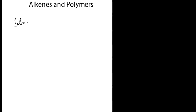An alkene is basically a hydrocarbon — a molecule made up of hydrogen and carbon — but it has a double bond. By definition you should only have one double bond, but you can have multiple double bonds throughout a larger molecule. We're just going to look at one double bond in a hydrocarbon for now.